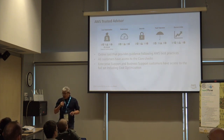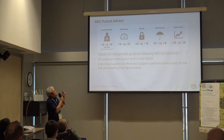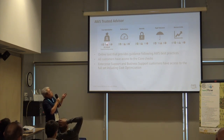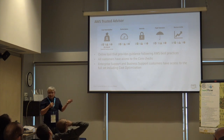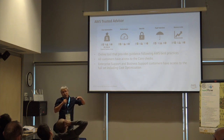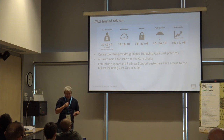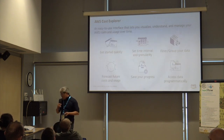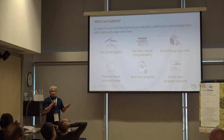Another tool is the AWS Trusted Advisor, which you should check on a very regular basis. It gives you a broader view of what you could do to optimize costs in your account, optimize performance of your resources, security, fault tolerance, and whether you're hitting any service limits — for example, how many EC2 instances you've spun up and whether you're getting close to the default limit. Think of it like your cost dashboard for the account.